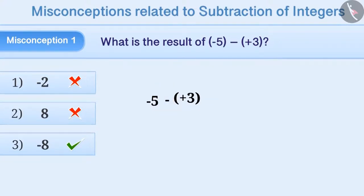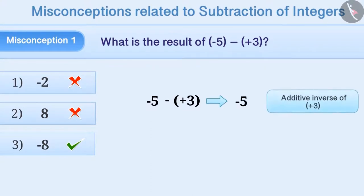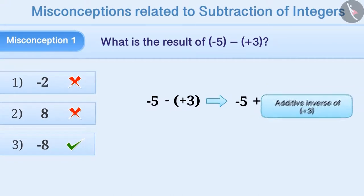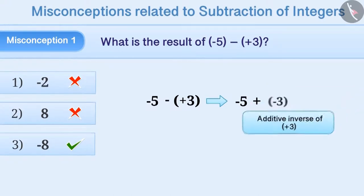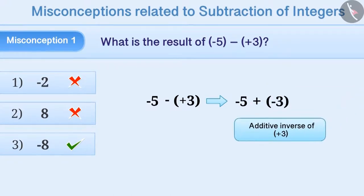Subtracting plus 3 from minus 5 means adding the additive inverse of plus 3 to minus 5. Thus, the additive inverse of plus 3 is minus 3. Therefore,